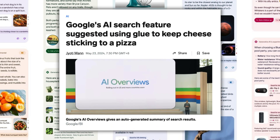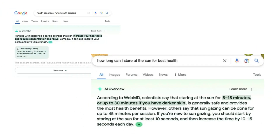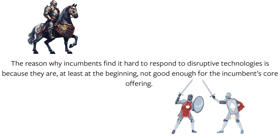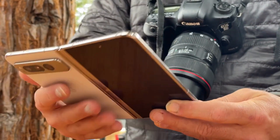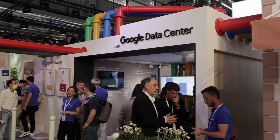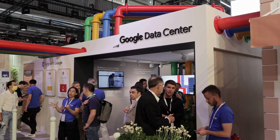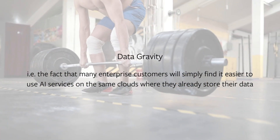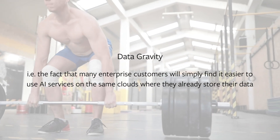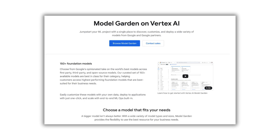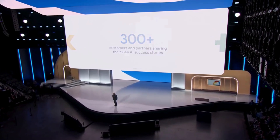Indeed, the fact that Google is being mocked mercilessly for messed up AI answers gets at why consumer-facing AI may be disruptive for the company. The reason why incumbents find it hard to respond to disruptive technologies is because they are, at least in the beginning, not good enough for the incumbent's core offering. Time will tell if this gives more fuel to a shift in smartphone strategies, or makes the company more reticent. The enterprise space is a different question. While I was very impressed with Google's enterprise pitch — which benefits from its integration with Google's infrastructure without all the overhead of potentially disrupting the company's existing products — it's going to be a heavy lift to overcome data gravity: the fact that many enterprise customers will simply find it easier to use AI services on the same clouds where they already store their data. Google does, of course, also support non-Gemini models. To the extent Google wins in enterprise, it may be by capturing the next generation of startups that are AI-first and, by definition, data light. A new company has the freedom to base its decision on infrastructure and integration.